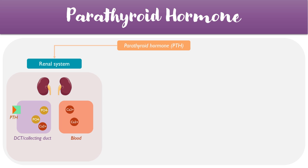This means that less calcium is lost in the urine, and more is reabsorbed back into the blood. At the same time, this binding process restricts the movement of phosphate back into the blood, so more phosphate is lost in the urine. The overall effect of this is therefore to increase renal calcium reabsorption and increase phosphate excretion into the urine.